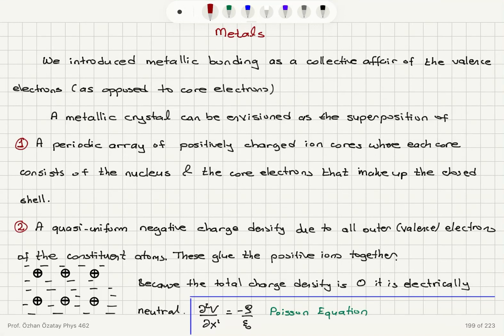We're going to talk about two different models of metals: the free electron theory — the Drude model and the Sommerfeld model. First of all, we view metals as a free electron sea that has a periodic arrangement of ions in it. We introduce metallic bonding as a collective affair of the valence electrons, as opposed to core electrons.